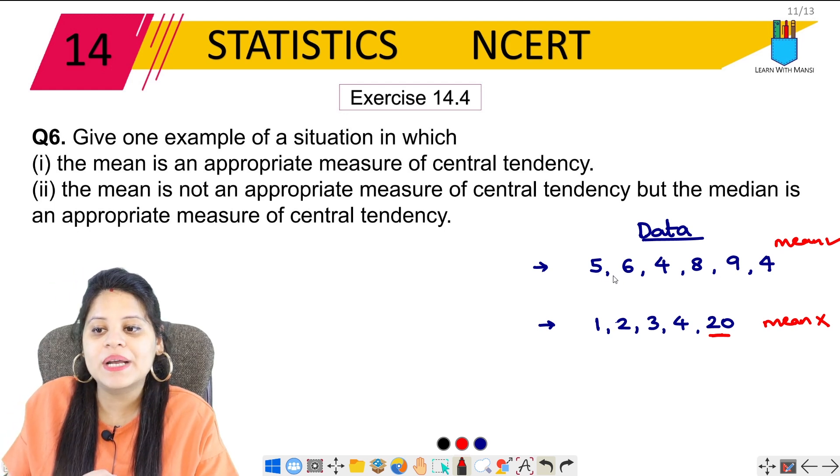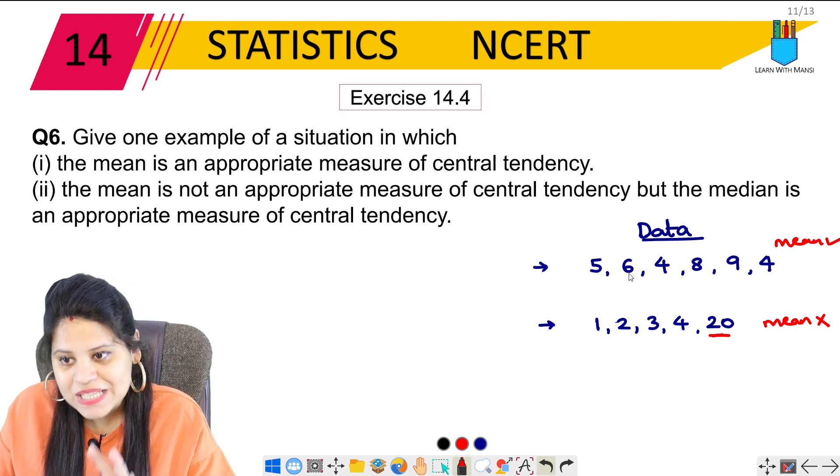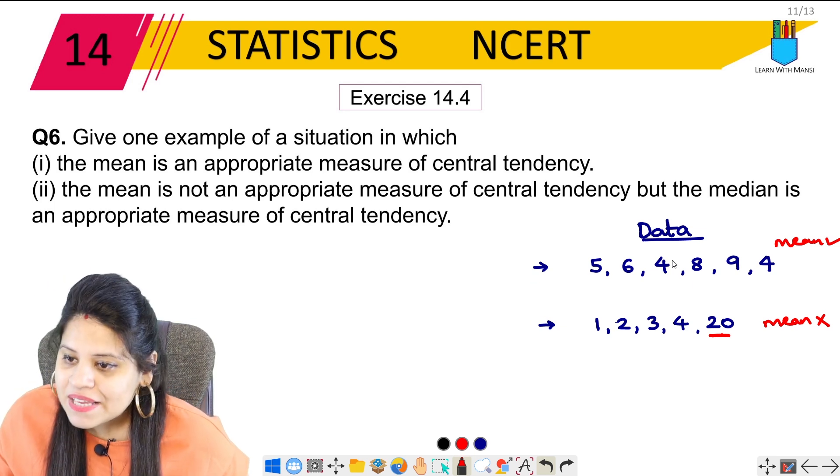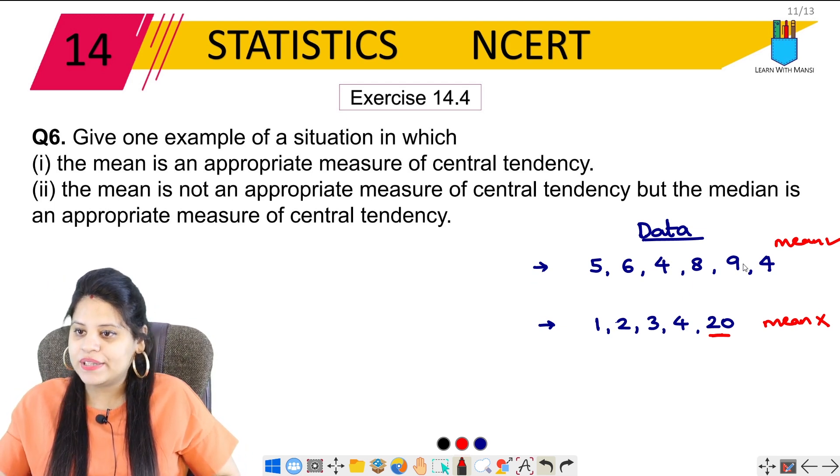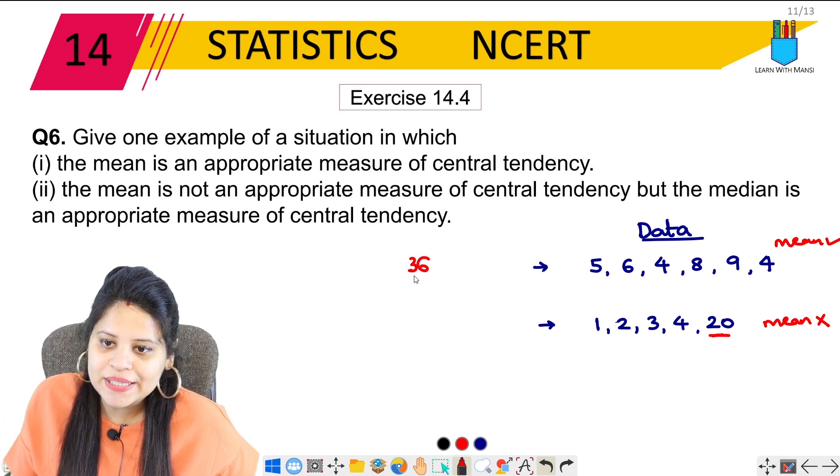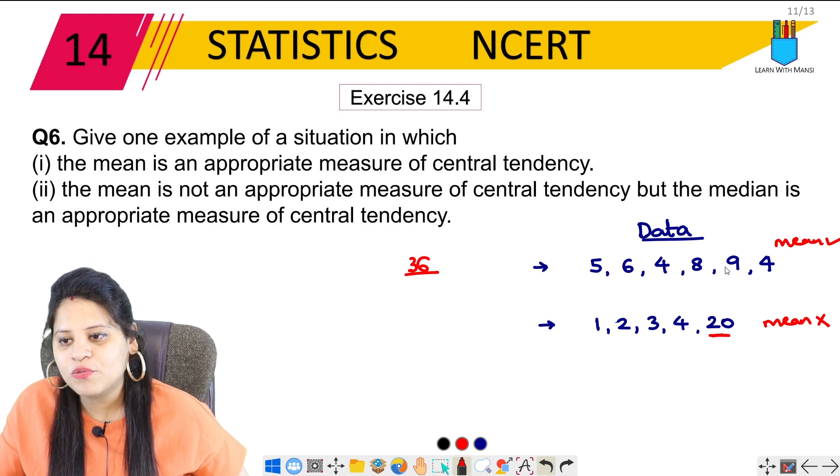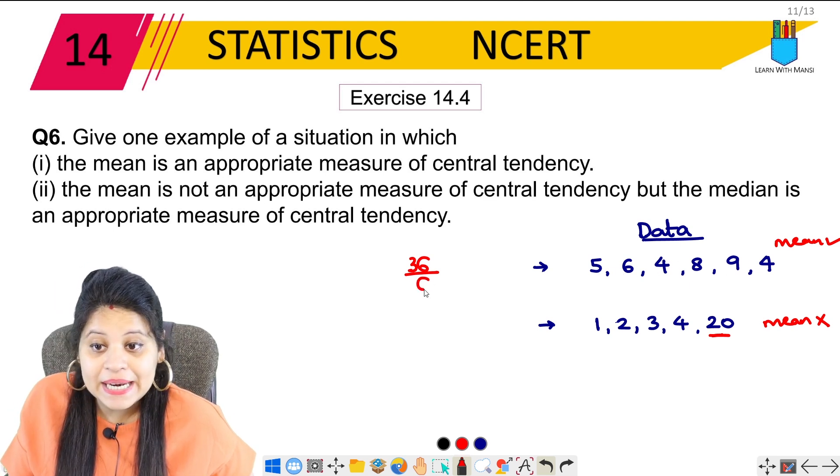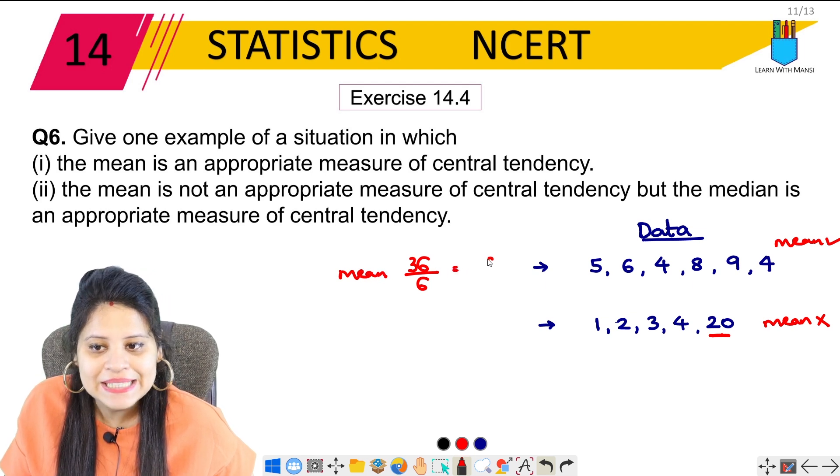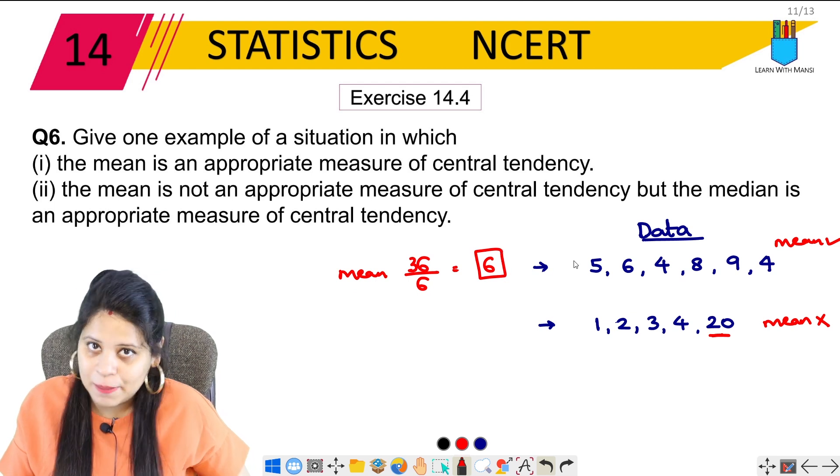In the first case, if we add this: 5, 6, 11, 15, 23, 36. It will be 36 upon 6. It will be 36 upon 6, which equals 6. So in this case, the mean will be appropriate.